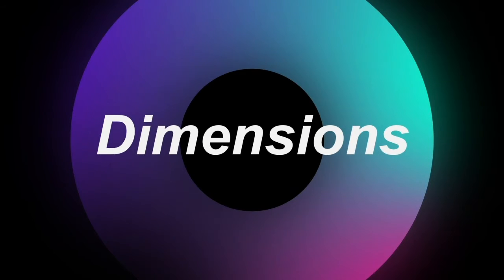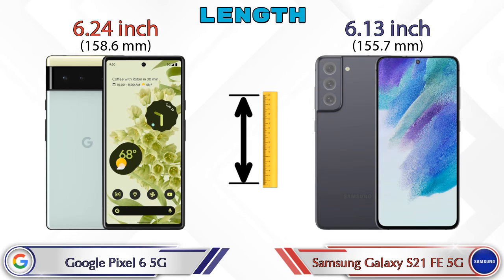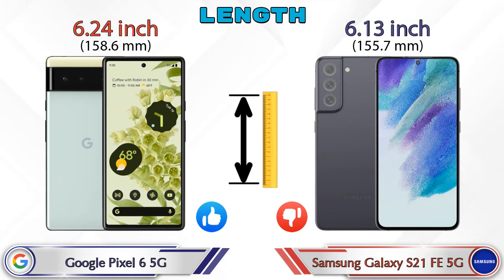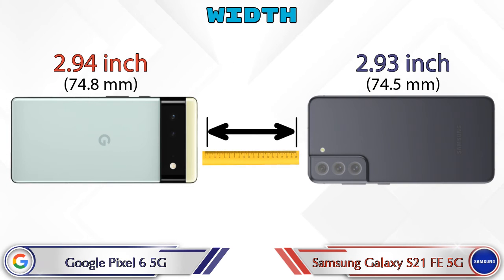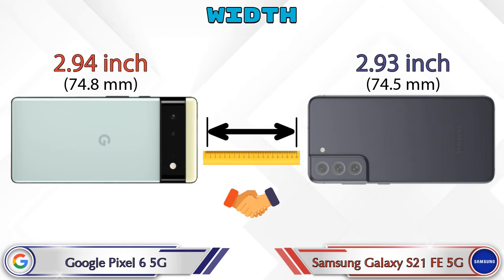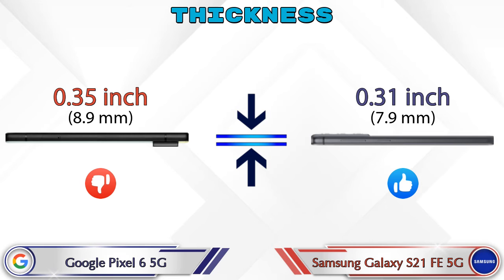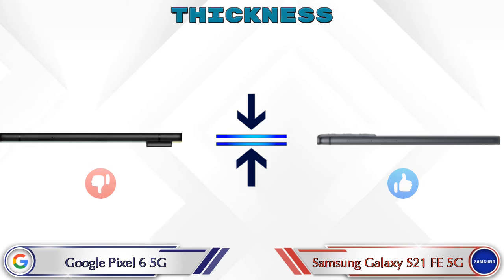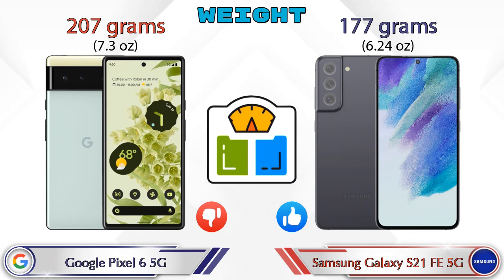Now let's check the details about dimensions. The length of the Pixel 6 5G is 6.24 inches, and the S21 FE 5G is 6.13 inches. Width on the Pixel 6 5G is 2.94 inches, and the S21 FE 5G is 2.93 inches — almost the same. Thickness: the Pixel 6 5G is 0.35 inches and the S21 FE 5G is 0.31 inches.